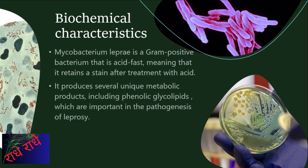M. leprae is a gram-positive bacterium that appears as small, rod-shaped cells under a microscope. It is acid-fast, meaning it retains a stain after acid treatment. This bacteria produces several unique metabolic products, such as phenolic glycolipids, which are linked to leprosy pathogenesis. Different biochemical characteristics help to further separate it from other types of bacteria.